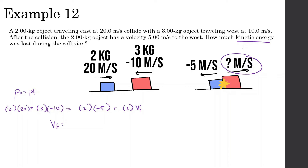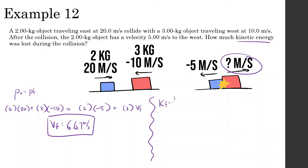Setting up the math: 2 × 20 + 3 × (−10) = 2 × (−5) + 3 × V2_final. Solving: 40 − 30 = −10 + 3 × V2_final, so 3 × V2_final = 20, giving V2_final = 6.67 meters per second to the right. Now let's find the final kinetic energy: KE_final = ½ × 2 × (−5)² + ½ × 3 × (6.67)² = 25 + 66.73 = 91.73 joules.